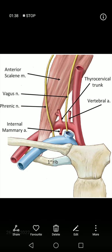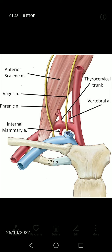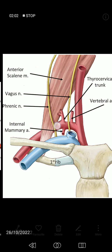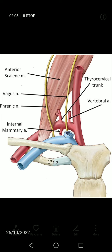The first part of the subclavian artery has three branches: the vertebral artery, the internal thoracic artery, and the thyrocervical trunk. The thyrocervical trunk itself divides into three branches: the inferior thyroid, suprascapular, and transverse cervical arteries. The second part gives rise to the costocervical trunk, and the third part gives rise to the dorsal scapular artery.